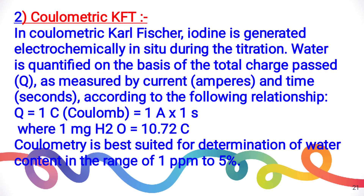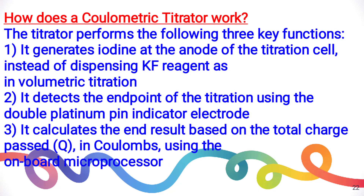Coulometric titration is suited for determination of water content in the range of 1 ppm to 5%. How does the coulometric titrator work? First, it generates iodine at the anode of the titration cell instead of dispensing KF reagent as in volumetric titration. Second, it detects the endpoint of the titration using the double platinum pin electrode. Third, it calculates the end result based on the total charge passed in coulombs using an onboard microprocessor.